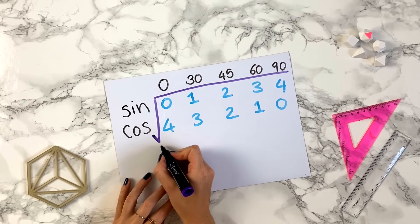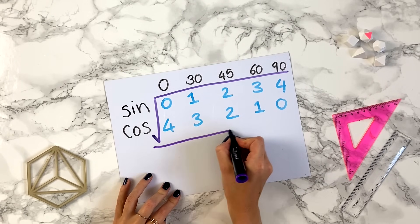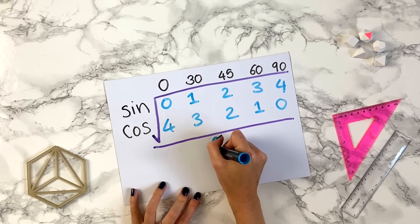Next thing you do is you draw a big division sign, so a big line going all the way over here. And then at the bottom you write 2.